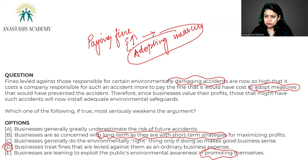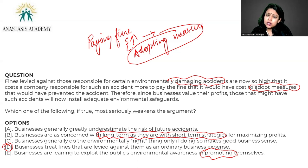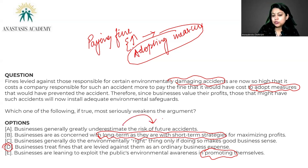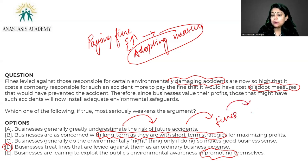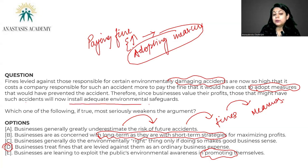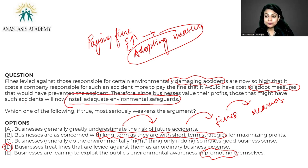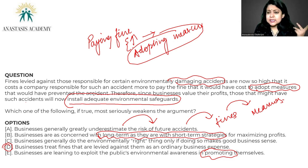The argument says: in order to save money, they will adopt the measures because they would have to pay a lot of fines. So they would adopt the measures because it is cheaper. But if businesses generally greatly underestimate the risk of future accidents, they would not be scared of the fines. If they are not scared of the fines, they would not adopt the measures — and hence the conclusion falls flat: that they will now install adequate environmental safeguards. No, because they are not scared of fines anymore, as they are greatly underestimating the risk of accidents. Answer is A.